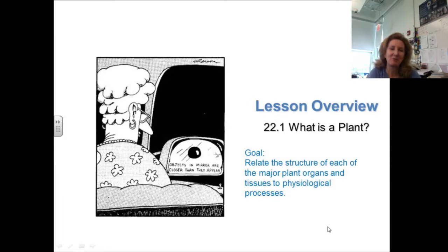Well, hello. On to chapter 22. We're only going to be covering 22.1 for right now. What is a plant? Our goal is to relate the structure of each of the major plant organs and tissues to the physiological processes of plants. We're going to be doing that goal for quite some time for the next couple or few lessons.